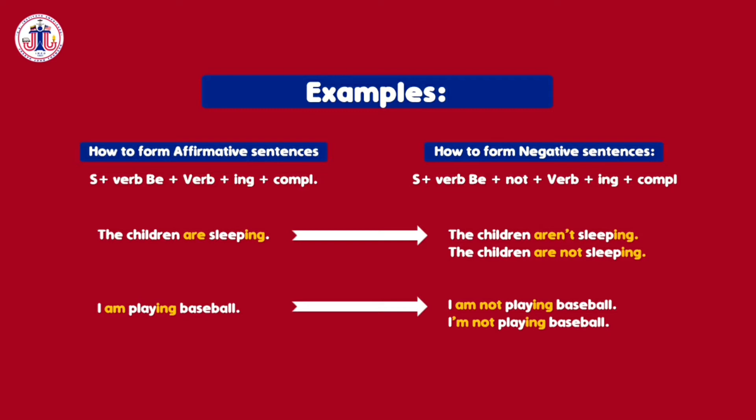How to form negative sentences: you need the subject plus the verb 'be' plus 'not' plus the verb plus -ing plus the complement. For example: 'The children aren't sleeping' or 'The children are not sleeping.' You can use the full form or the contraction. Another example: 'I am not playing baseball' or 'I'm not playing baseball.' Pay attention — you can only use the contraction 'I'm' with 'I am.'